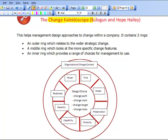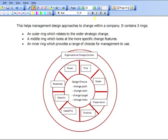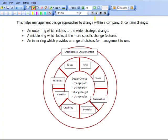Hopefully you're aware of what a kaleidoscope is. A kaleidoscope is a visual object which you look through, and as you move the outer rings, the image you see would change. And that's the concept that we're trying to talk about here. The change kaleidoscope helps management design approaches to change within a company.